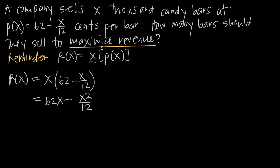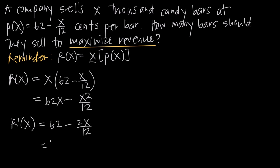Whatever you've been asked to maximize or minimize, once you get it into a simplified form like this, you want to take the derivative of that function. The derivative of the revenue function, R prime of x, is found by differentiating the right-hand side. The derivative of 62x is 62. The derivative of negative x squared over 12 — bringing the exponent down — gives minus 2x over 12, which simplifies to 62 minus x over 6.